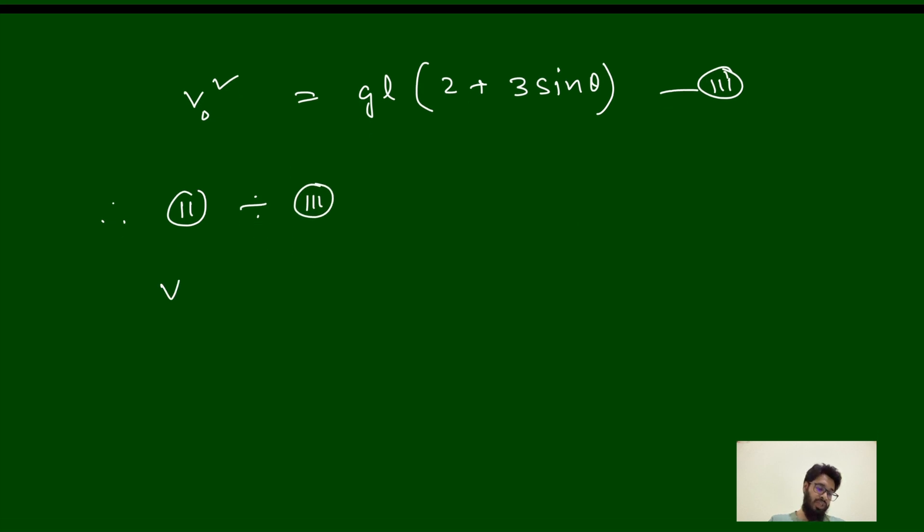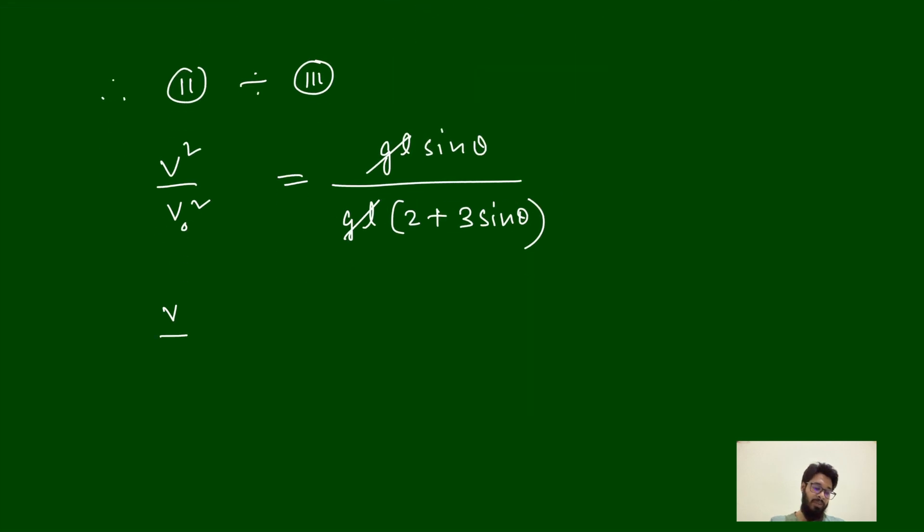We will get v square by v0 square is equal to gL sin theta divided by gL(2 plus 3 sin theta). gL gets cancelled out, and v by v0 is equal to sin theta divided by 2 plus 3 sin theta, divided by 1 by 2.